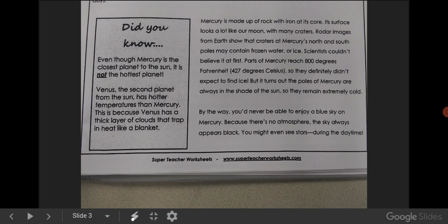Scientists couldn't believe it at first. Parts of Mercury reach 800 degrees Fahrenheit, or 427 degrees Celsius. So they definitely didn't expect to find ice. But it turns out the poles of Mercury are always in the shade of the Sun, so they remain extremely cold.